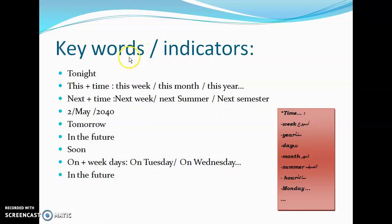Now let's look at the time markers — also called indicators or keywords. If we see a time marker, the sentence is a future plan. The time markers for this rule include: tonight, this + time (this week, this month, this year, this summer), next + time (next week, next summer, next semester, next Monday), any future date, tomorrow, in the future, soon, and on + weekdays (on Tuesday, on Wednesday).